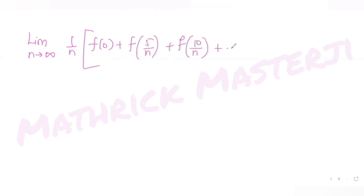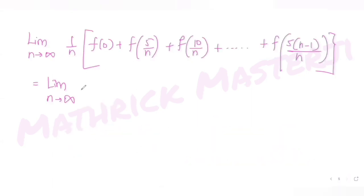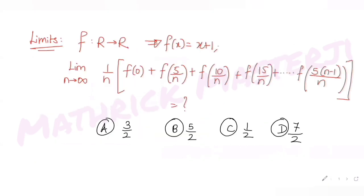The question asks us to apply the limit as n tends to infinity to 1 over n times the bracket f of 0, f of 5 over n, f of 10 over n, and so on. We can now write this as the limit as n tends to infinity of 7 over 2 minus 5 over 2n. Putting n equals infinity, 5 over 2n becomes 5 over 2 times infinity, which is zero. So the answer is 7 over 2.